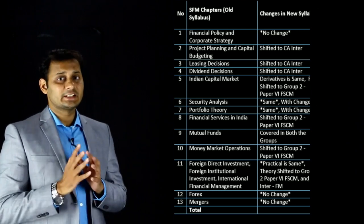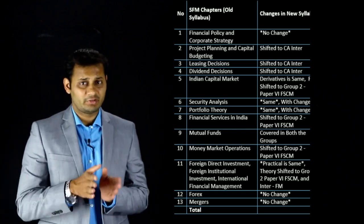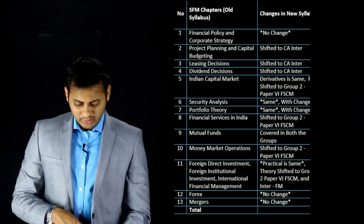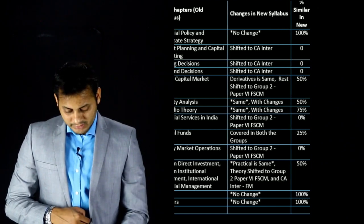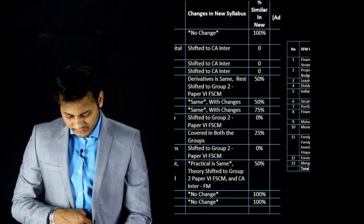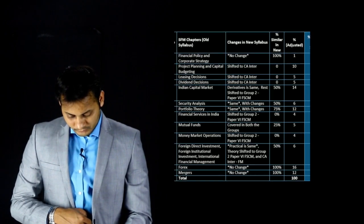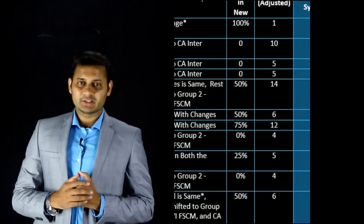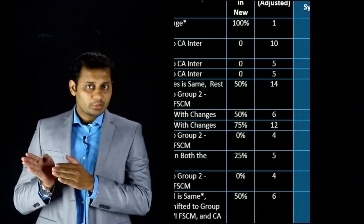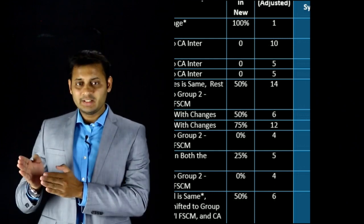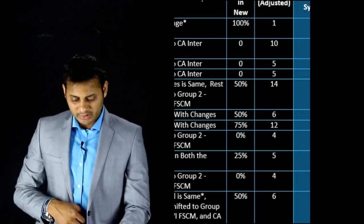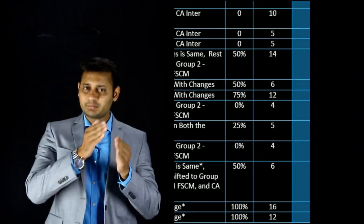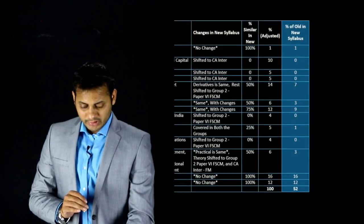All these images are available in PDF format at conferenza.in website, in the download section — you will find it recently uploaded under 'SFM changes in new syllabus'. You can download and keep it for reference. Now, moving to the next image — I will explain the percentage column: it shows what percentage of each chapter is in the new syllabus. Financial Policy: 100%, Capital Budgeting: 0%, Leasing: 0%, Dividend: 0%, Indian Capital Market: 50%, Forex: 100%, Mergers: 100%.